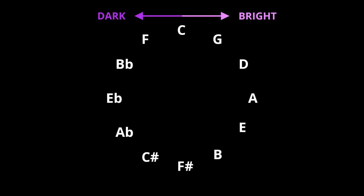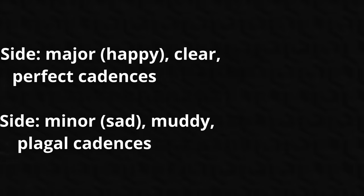For example, using C as our chosen note, a chord constructed from the bright side sounds like this, while a chord constructed from the dark side sounds like this.